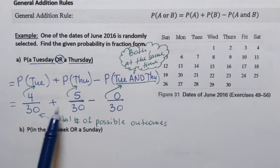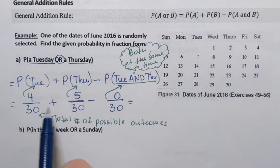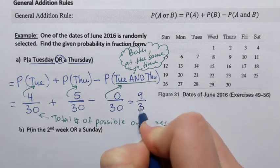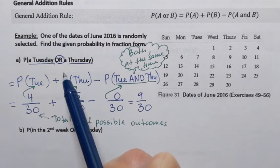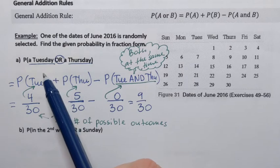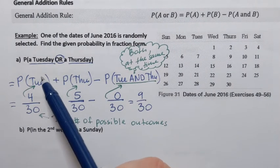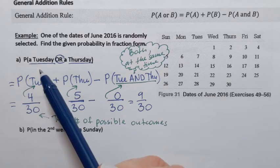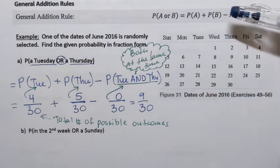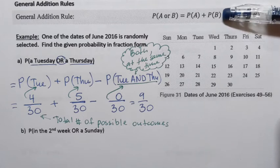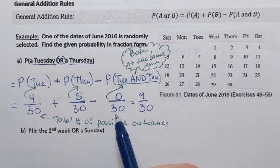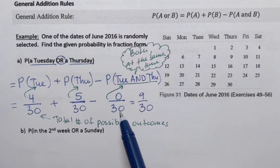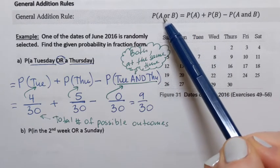We're only using the first two fractions: 4 over 30 plus 5 over 30, which equals 9 over 30. The reason we got zero is that Tuesday and Thursday are mutually exclusive or disjoint events — they can't happen at the same time. When dealing with mutually exclusive events, the general addition formula technically turns into a simple addition formula. But you can still apply the general addition formula in those cases; you'll just find that the last portion turns into zero. It's safe to use the general addition formula for all cases where you need to find P(A or B).